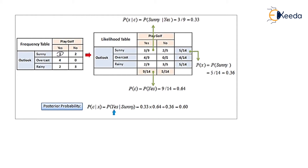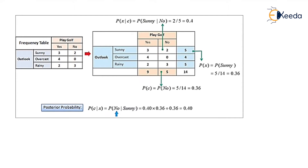After computing the likelihood table, we calculate the posterior probability for yes. For yes and sunny, we get the posterior probability as 0.33 × 0.64 divided by 0.36. The probability of 9/14 is 0.64, multiplied by the probability of sunny given yes which is 0.33, divided by the prior probability of X which is 0.36, giving a total probability of 0.60. Similarly, we calculate the probability for no, getting a probability of 0.40.